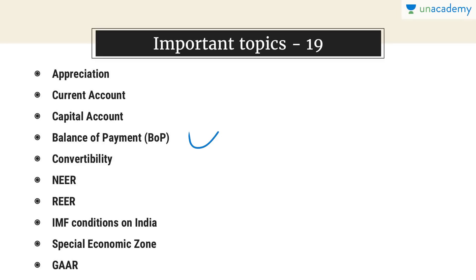Convertibility in India — current account and capital account. Then SEZ — Special Economic Zone — very important. Also NEER and REER: Nominal Effective Exchange Rate and Real Effective Exchange Rate. Real means inflation is included; nominal means inflation is not taken into account.